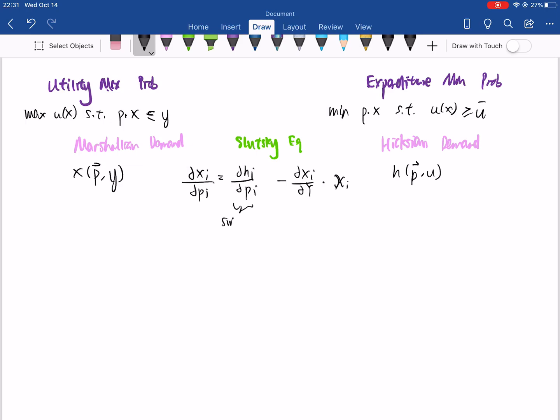So this is the substitution effect. This looks at how the Hicksian changes with respect to the price. And this is the income effect, which looks at how the Marshallian changes with respect to the income. And that's multiplied by X because your income effect measures a slope, and that slope has to be multiplied by the change in the X variable to get you a change in the Y variable. So this is Slutsky decomposition, and this basically allows you to go back and forth between the Hicksian demand and the Marshallian demand.